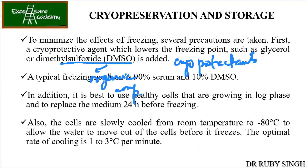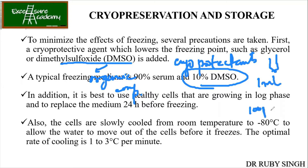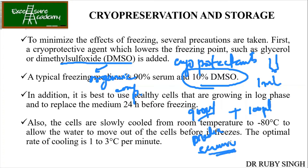Whenever we make any freezing vials of animal cells or tissue, we add around 10% of DMSO. In the vial, the total volume is 1 ml, so 10% of 1 ml is 100 microliters. The remaining 900 microliters will be your media containing serum. Serum is required in high percentage because it has all the growth factors, which will keep your cells alive, and DMSO will help in preventing ice crystal formation.